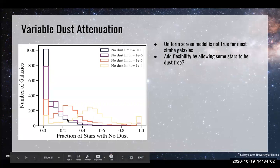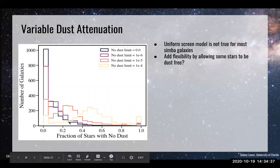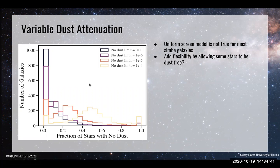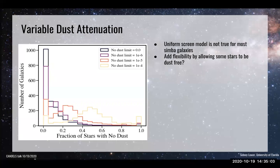This plot shows the fraction of stars that see no dust along the line of sight for one inclination. The asterisk comes from how you define 'no dust' in terms of optical depth. If you require an optical depth of literally zero, very few stars qualify. But if you relax that constraint to 10⁻⁶ or 10⁻⁵ in V-band optical depth, there is an appreciable number of unobscured stars — a significant departure from the assumption of a screen model.